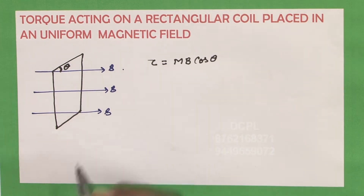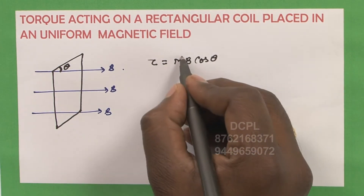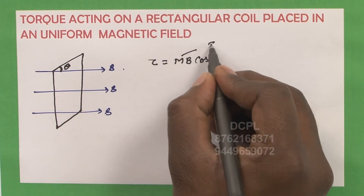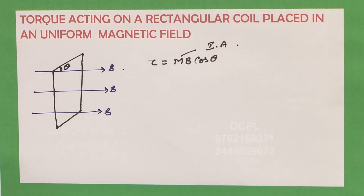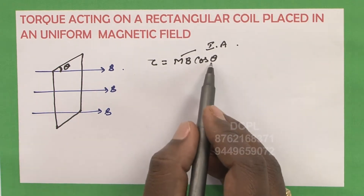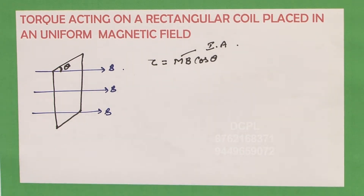The torque is given by the formula M into B into cos theta, where M is the magnetic moment of the coil, that is current into area, B is the magnetic field, and theta is the angle made by the plane of the coil with the magnetic field.